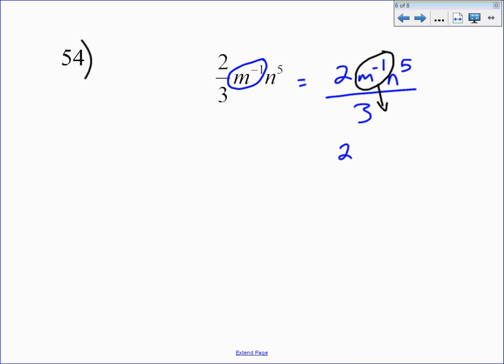So you're left with on top 2 n to the fifth, and then on bottom, 3 m, and now it's to the positive first power. Anything to the first power is just whatever it was, so we don't even have to write the 1, and 2 n to the fifth over 3 m is our answer.